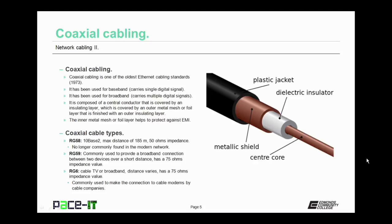There are several different types of coax cable. There is RG58, which was used in 10Base2 networking. It could span a maximum distance of 185 meters and had a 50 ohms impedance value. It's no longer commonly found in the modern network. Then there's RG59, commonly used to provide a broadband connection between two devices over a short distance. It has a 75 ohms impedance value, and it's only used for short distances because it leaks its signal.